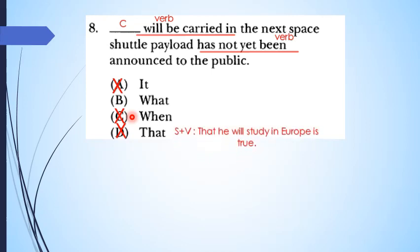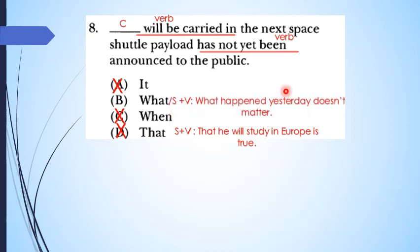Apa bedanya what sama that? Kalau susunan that, itu diikuti oleh susunan subjek predikat. Misalnya: that he will study in Europe is true. Sehingga that ini di depan susunannya subjek, konektor subjek predikat. Apabila susunannya what, what itu bisa berupa konektor sekaligus sebagai subjek. Sehingga: what happened yesterday doesn't matter. What happened yesterday sebagai sebuah klausa yang bentuknya menjadi subjek fungsinya. Verbnya adalah doesn't matter. Sehingga yang nomor delapan ini, yang paling tepat adalah pilihan B. Contohnya seperti: what happened yesterday doesn't matter.